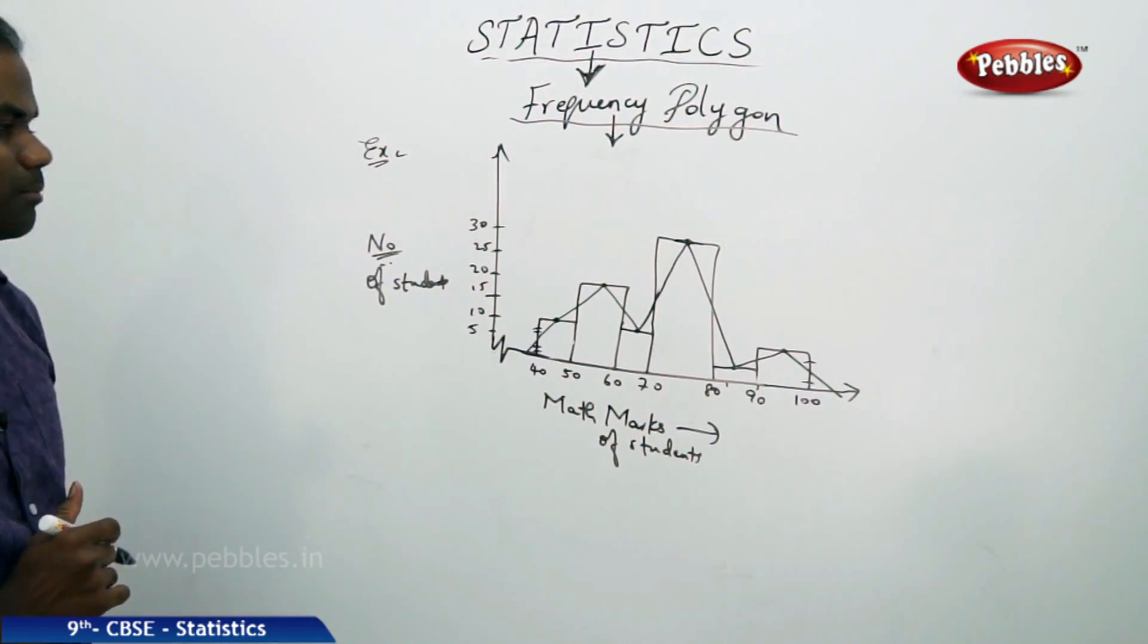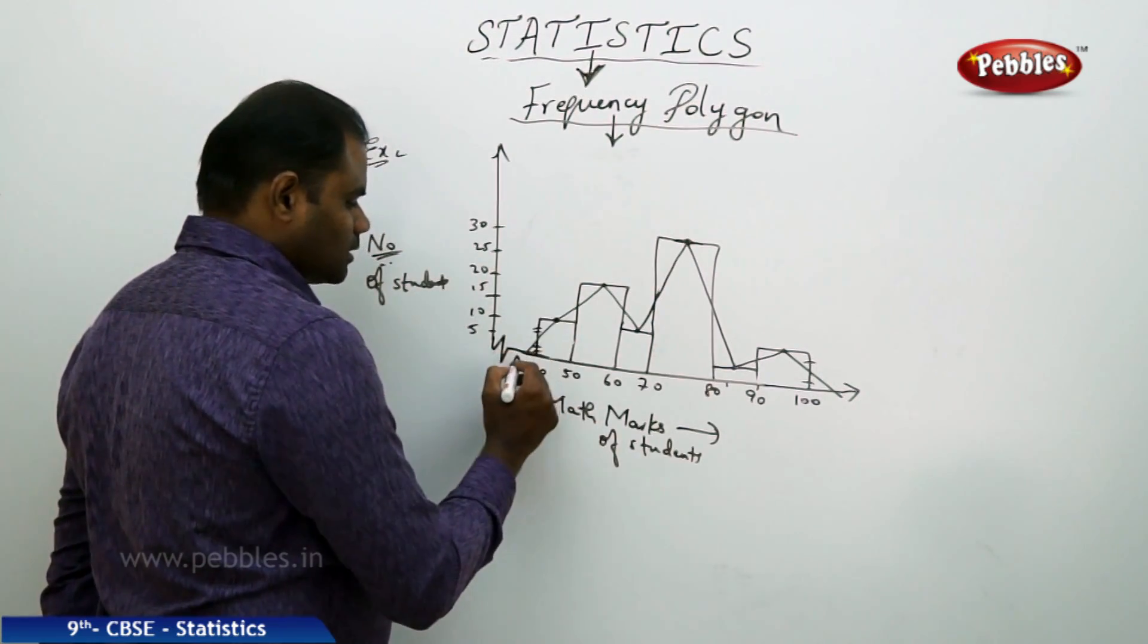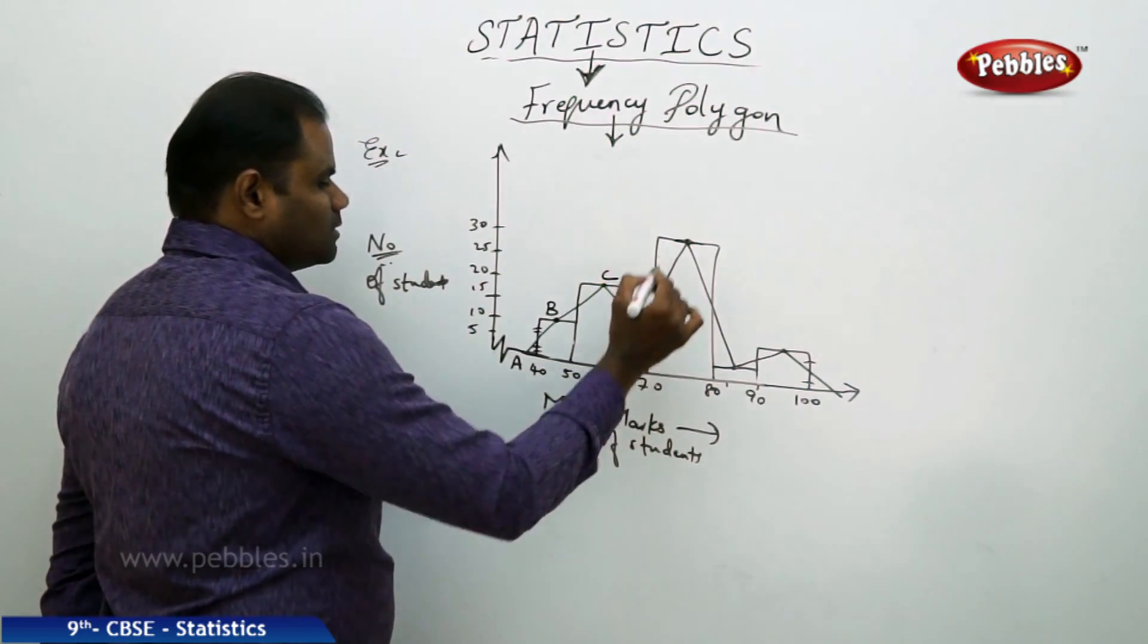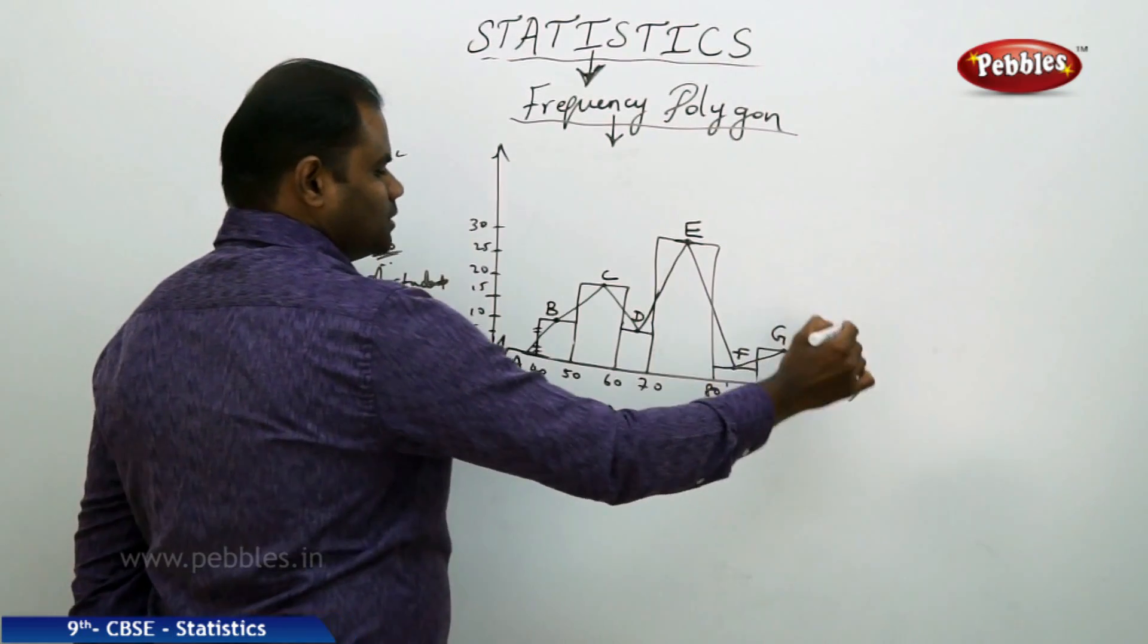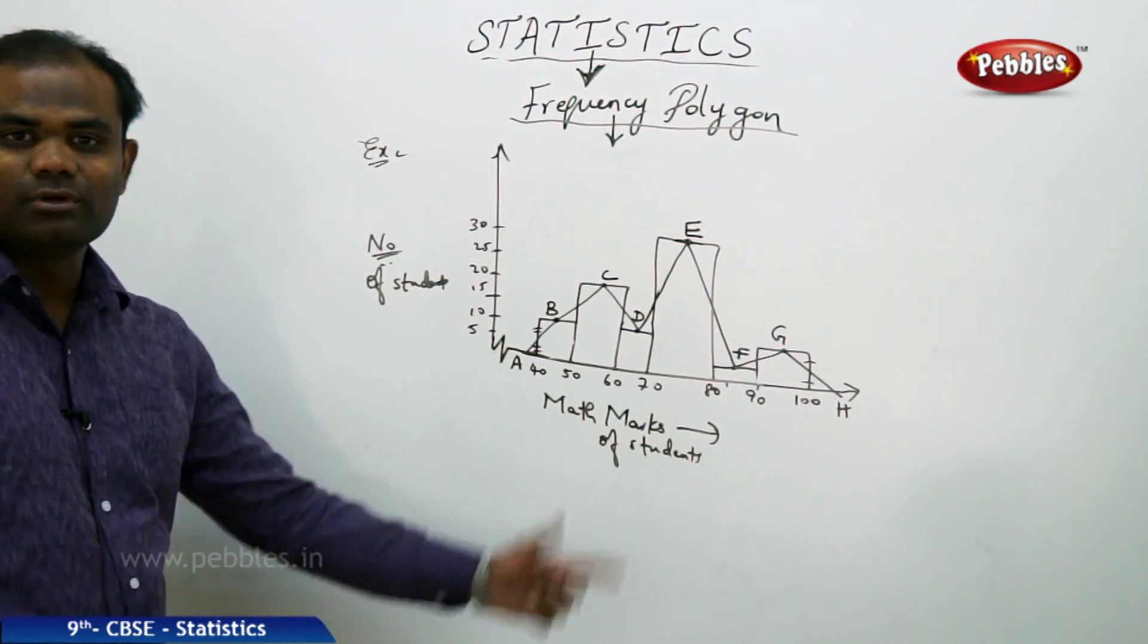And here exactly cutting at the middle point, we get a polygon. So a polygon which is A, B, C, D, E, F, G, and H is called a frequency polygon.